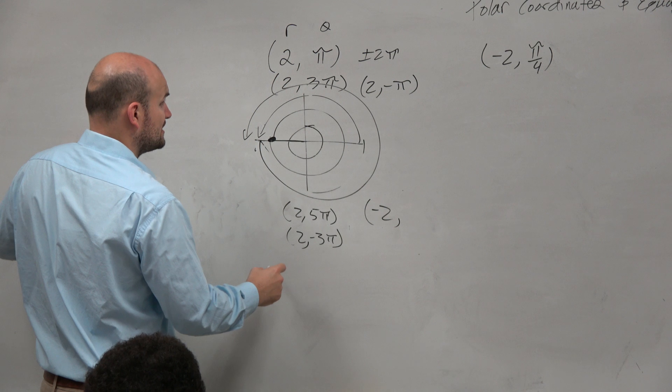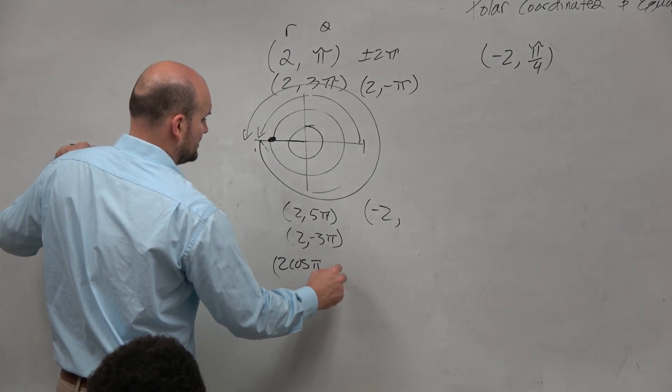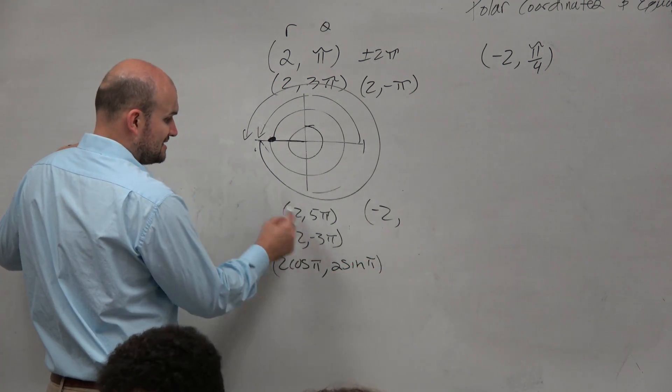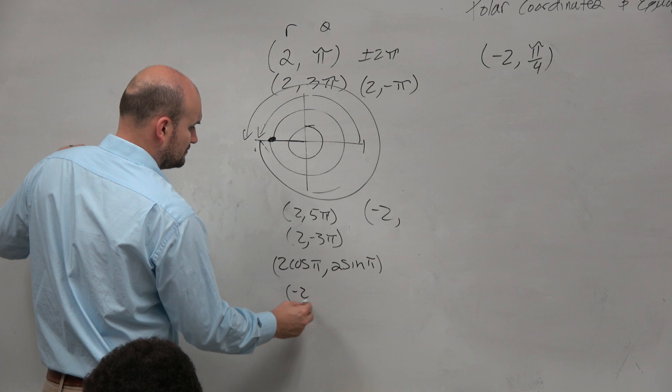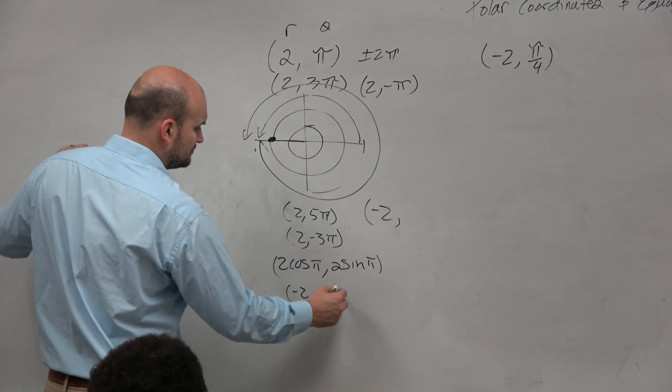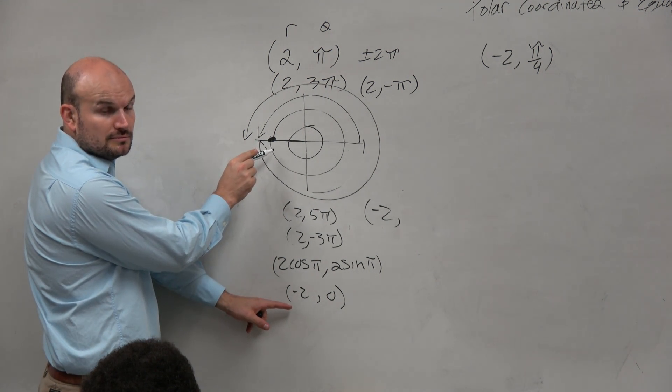Let's write this in rectangular form. So this is 2 cosine of pi, comma, 2 sine of pi. Cosine of pi is negative 1, so that's negative 2. And this one is sine of pi is 0, so that's 0. So that's the rectangular format, which you guys can see is pretty obvious at the same point. Right?